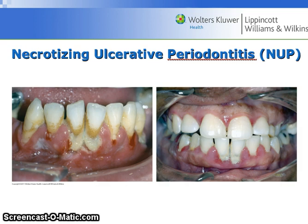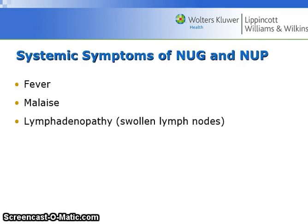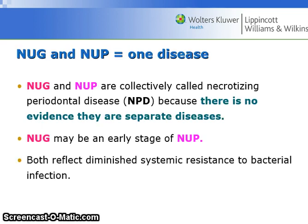Here are some images of NUP. There is also fever, malaise, and lymphadenopathy — swollen lymph nodes — accompanying NUG and NUP. They are collectively called necrotizing periodontal disease because there is no evidence that they are separate diseases, and NUG may be an early stage of NUP. Both reflect diminished systemic resistance to bacterial infection.